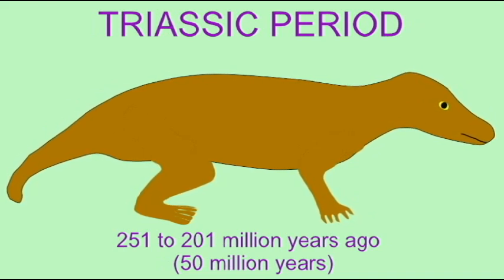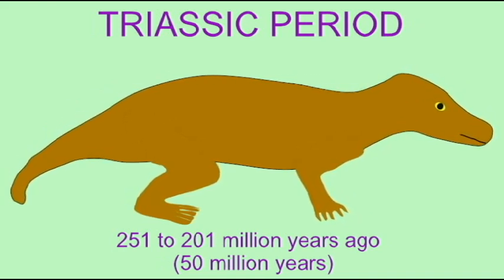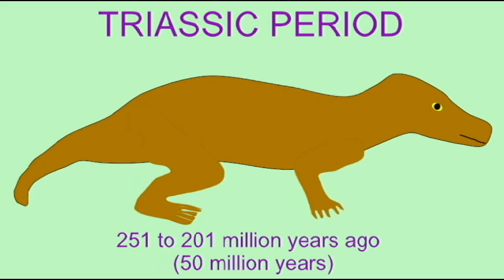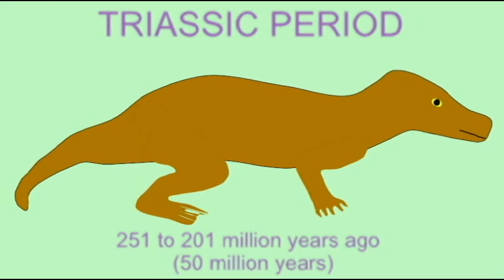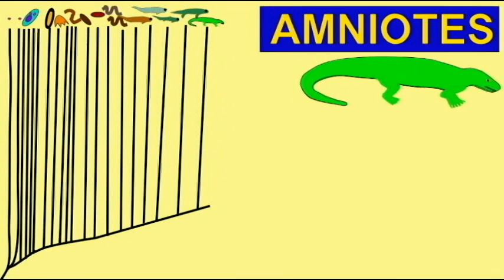After the mass extinction of the Permian period, the Cynodont reptiles which began the Triassic period were small but were very mammal-like. By the middle of the Triassic period, they had evolved into true mammals.